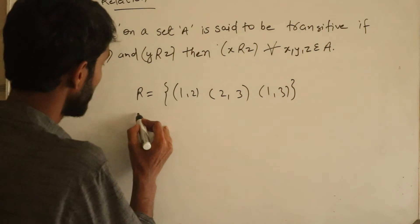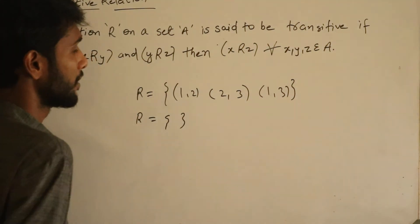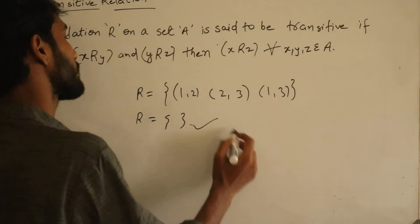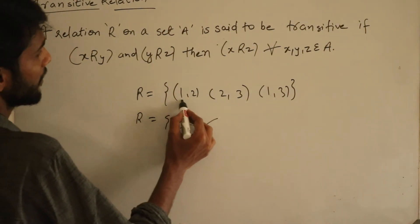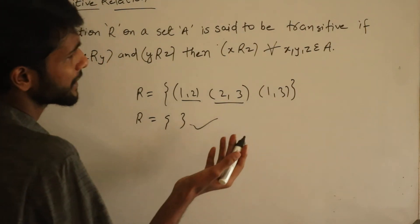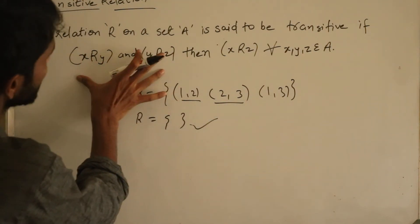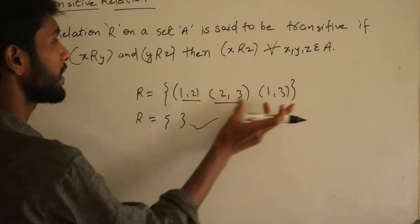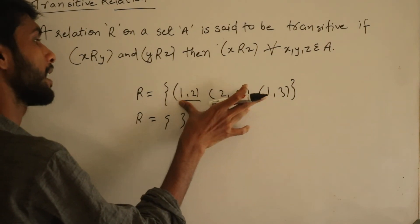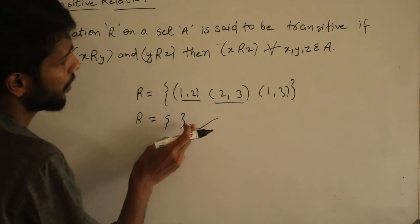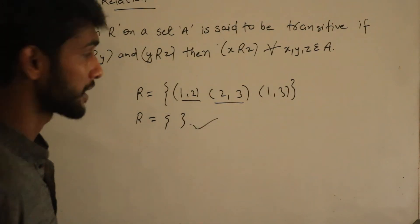See this relation. You can see this relation is also transitive relation. Why? Because 1,2 and 2,3 is not present. If it is present, then this should be present. If these ordered paired elements are not present as set, then you can also call that relation is transitive relation.